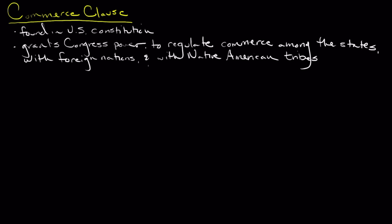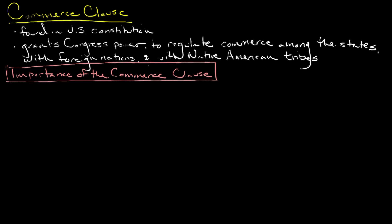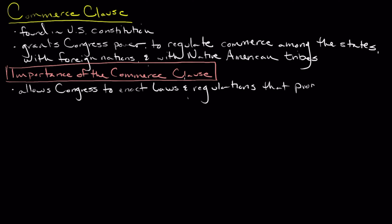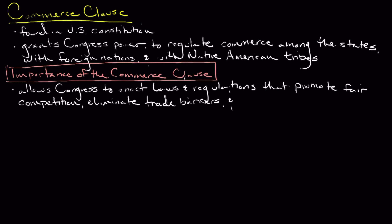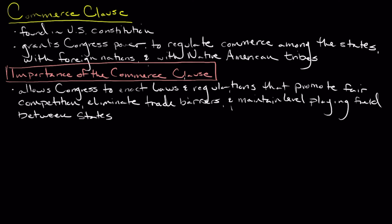This grant of authority has very far-reaching implications for how the government regulates businesses operating within the U.S. The Commerce Clause plays an important role in ensuring a unified and regulated economic system across the country, empowering Congress to enact laws and regulations that promote fair competition, eliminate trade barriers, and maintain a level playing field among the states.